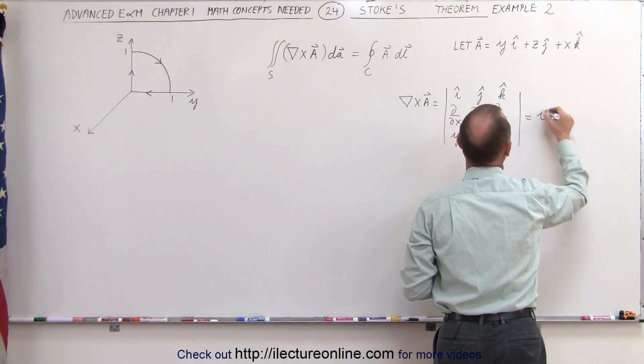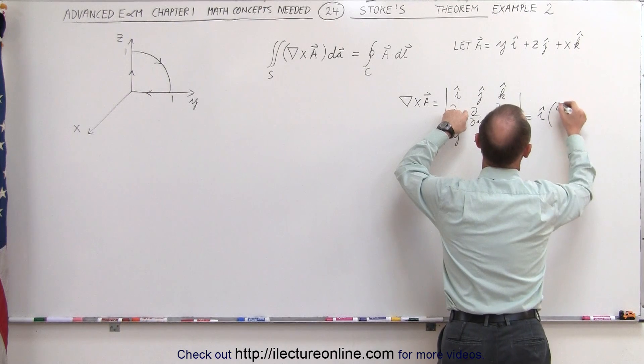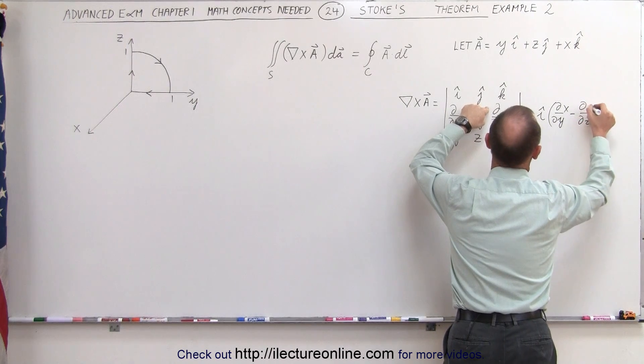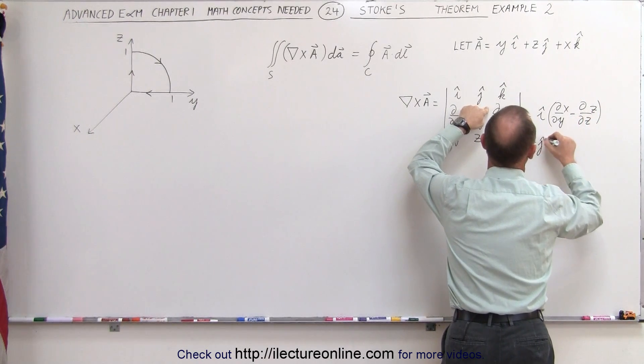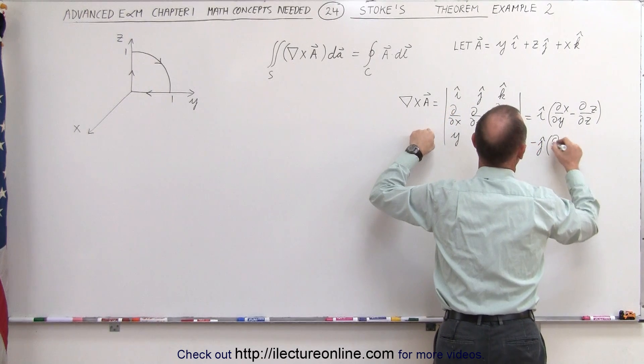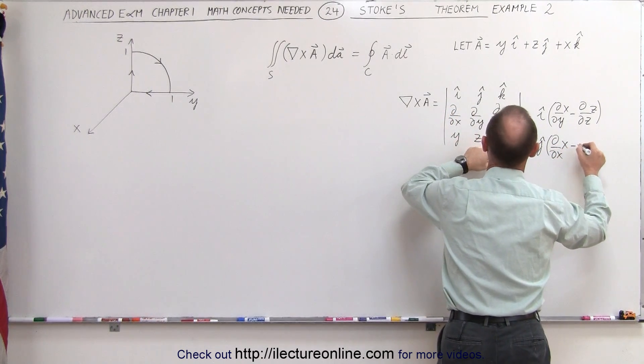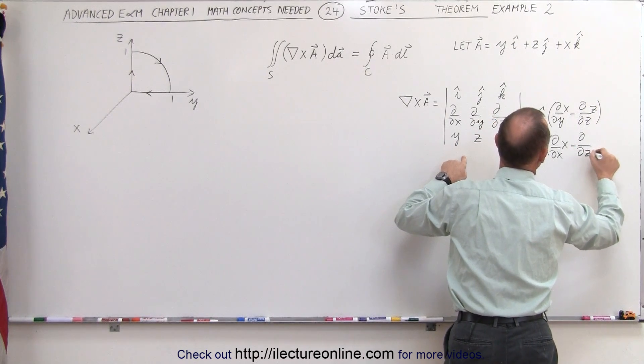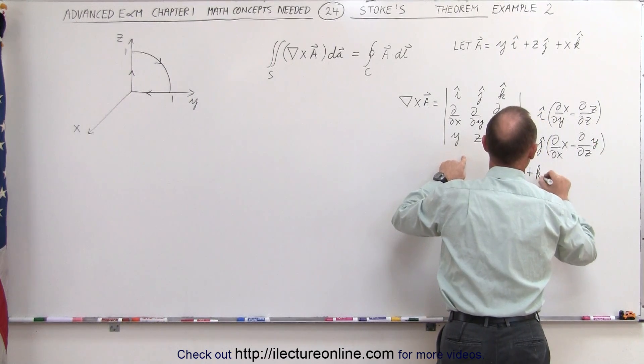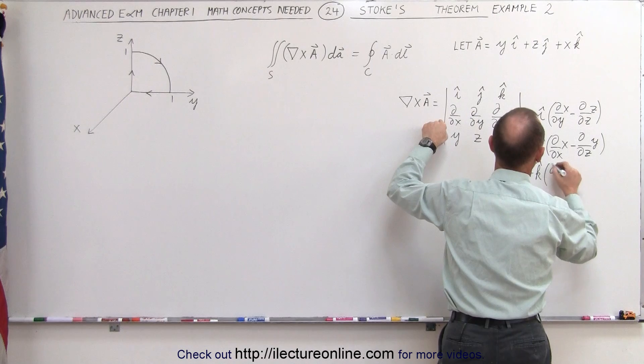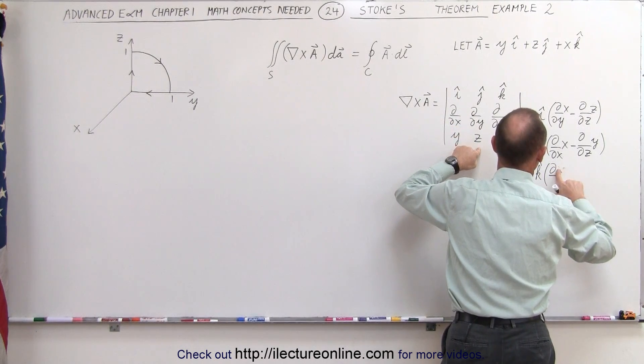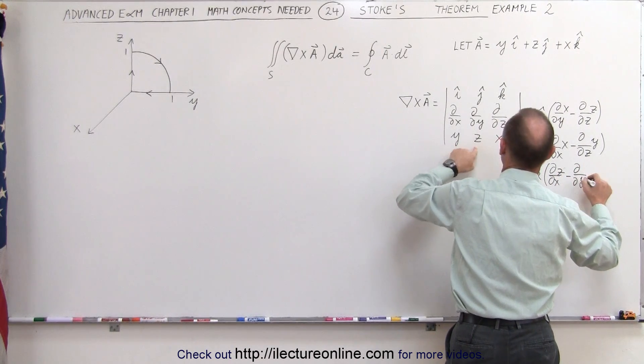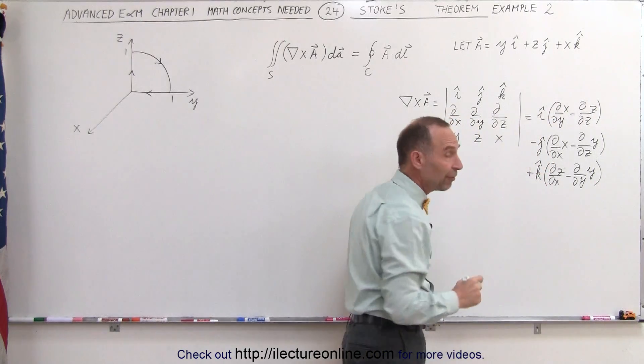That would be equal to the i-unit vector times the partial of x with respect to y minus the partial of z with respect to z, minus the j-unit vector, the partial of x with respect to x minus the partial of y with respect to z, and plus k times the partial with respect to x of z, minus the partial with respect to y of y, and if we then simplify that, we get the following.